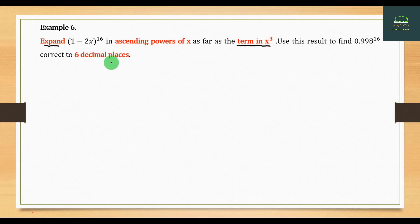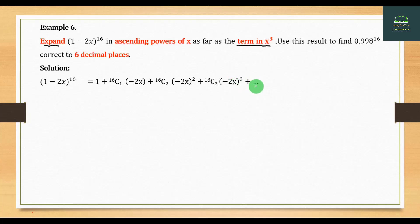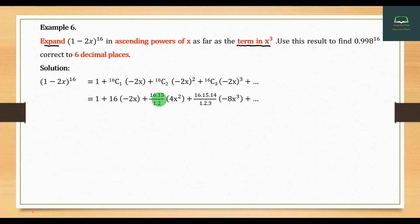So we will be able to use this result to find 0.998 to the power 16 to 6 decimal places. We will be able to use this result. 16 minus 2x plus. 16 is 2, so we can do it. 16 into 55, 1 into 2. 2 is 3. If you have a 10, so we can do it. About 1, so we can do it. Plus 4x squared.